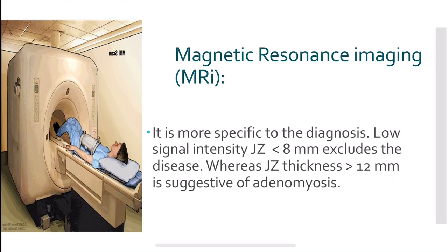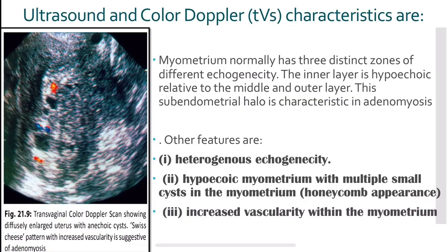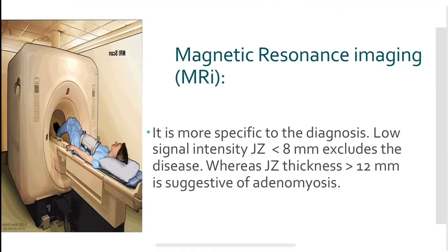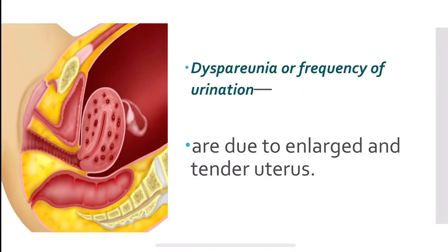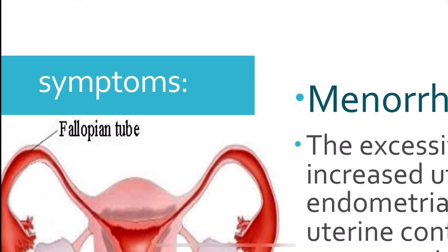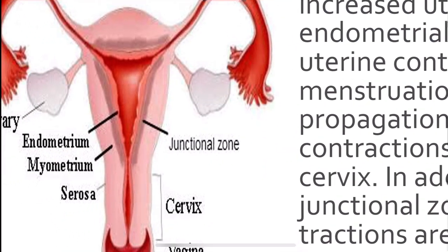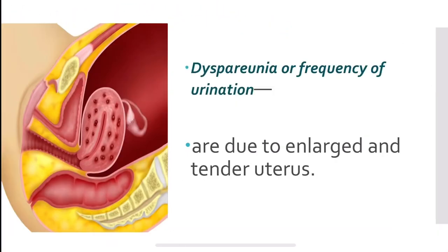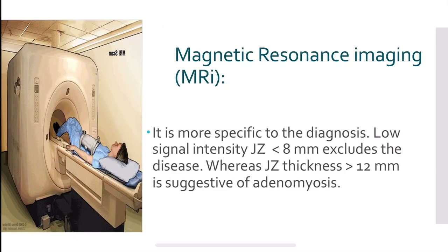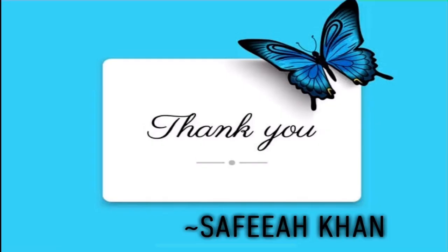MRI is more specific for the diagnosis of adenomyosis. A junctional zone thickness of less than 8 mm excludes the disease, while a junctional zone greater than 12 mm is suggestive of adenomyosis. If ultrasound fails to give a clear diagnosis, MRI is recommended.